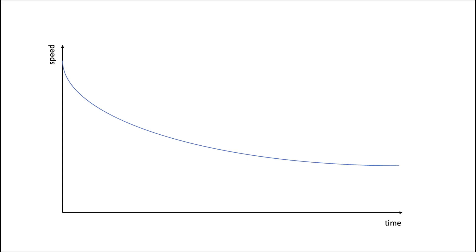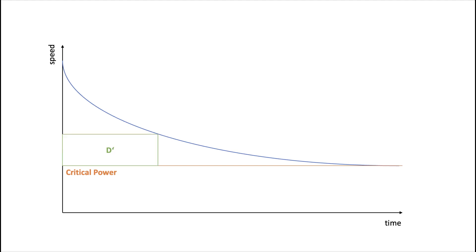Critical speed is defined as the velocity one can run without fatiguing. It is portrayed by the orange line and marks a fixed velocity. Furthermore, the test gives an indication of the anaerobic capacity, which is described as D' and is defined as the maximal distance that can be run above critical speed. D' can be compared to a battery that represents the anaerobic capacity — you can either use a lot of it over a short period of time, or less over a longer time span.